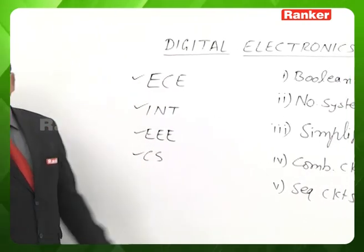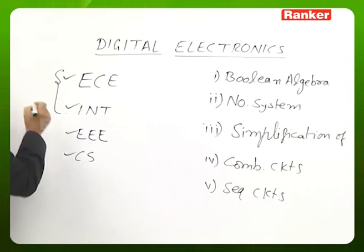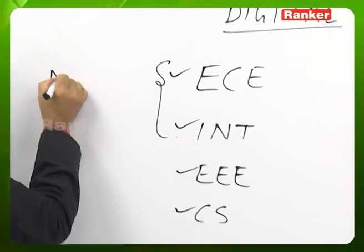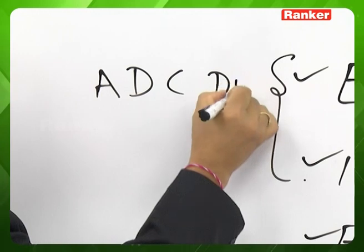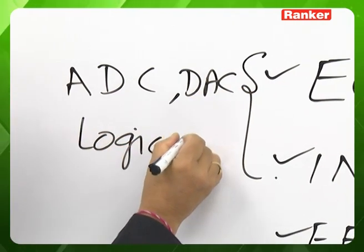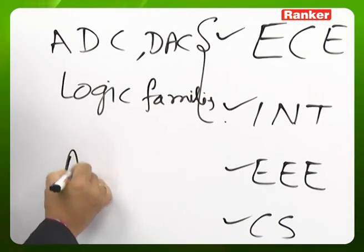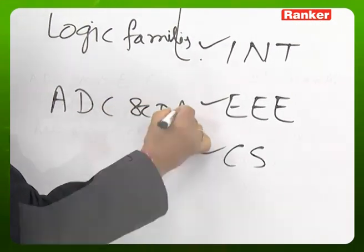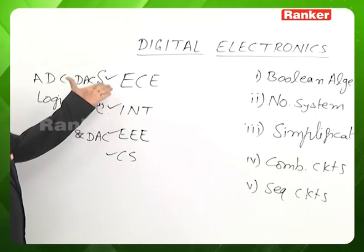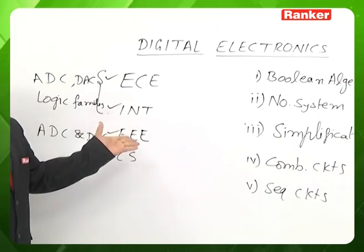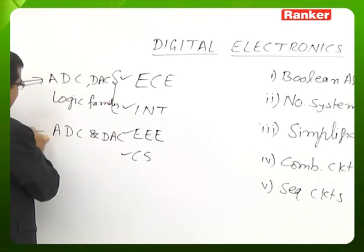In addition to those common topics, for ECE and Instrumentation branches the other topics include analog-to-digital converters, digital-to-analog converters, and logic families. For EEE branch, A-to-D converters and D-to-A converters are additional topics in the GATE exam. These are also common topics for ECE and EEE in the IES exam.